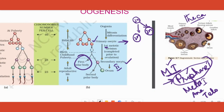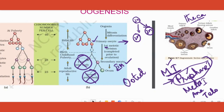Along with the secondary oocyte, another structure called a polar body is also formed, but this is degenerated so we won't focus on it. The secondary oocyte starts moving towards the fallopian tube and waits there for the sperm. If it meets with the sperm, it completes meiosis phase 2, and then we call it the ootid — a haploid ovum. Along with that, a secondary polar body is produced, which is also degenerated.